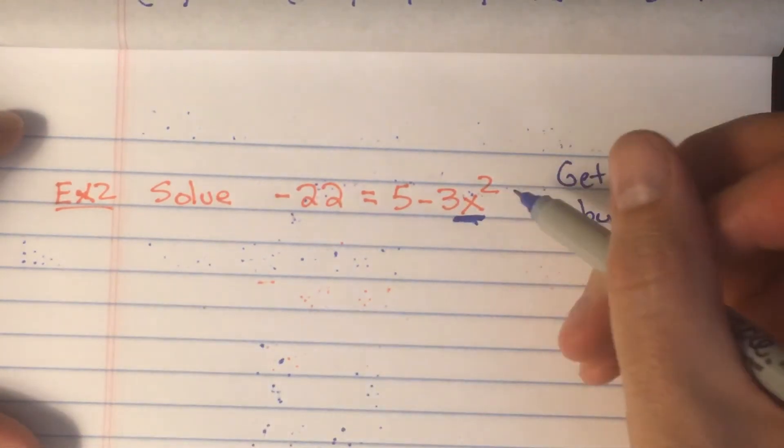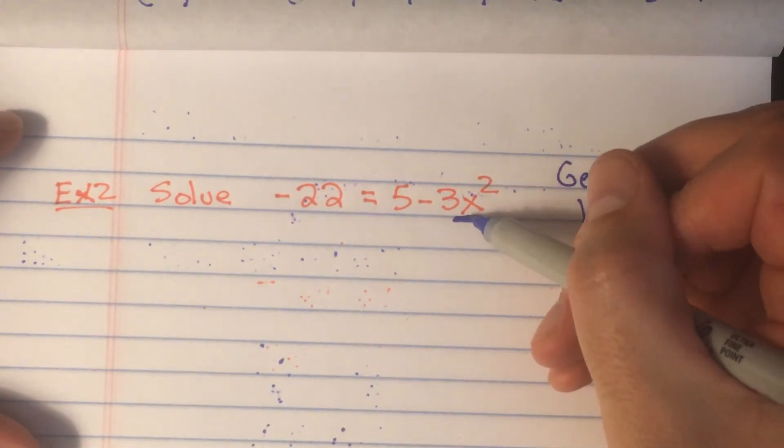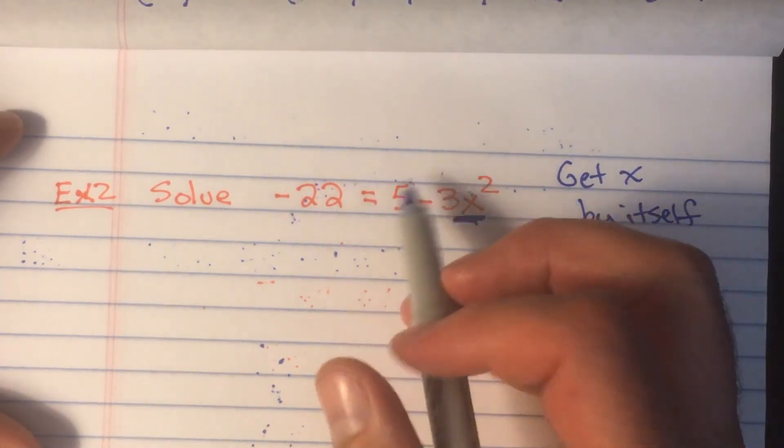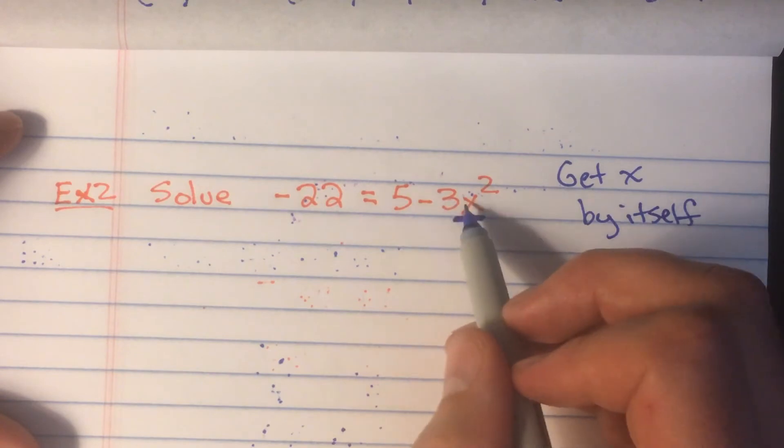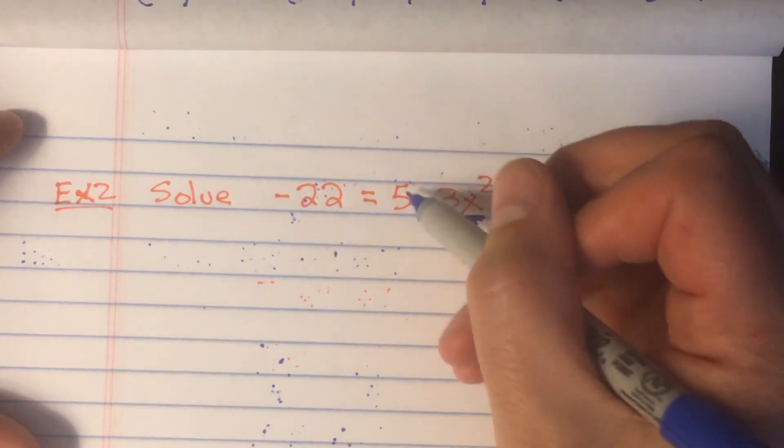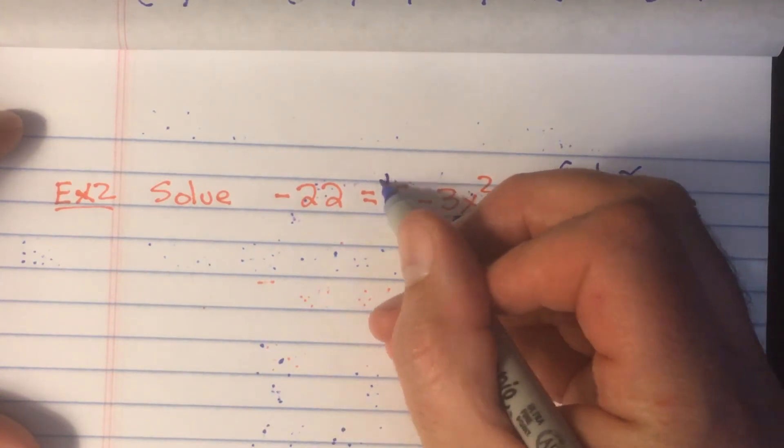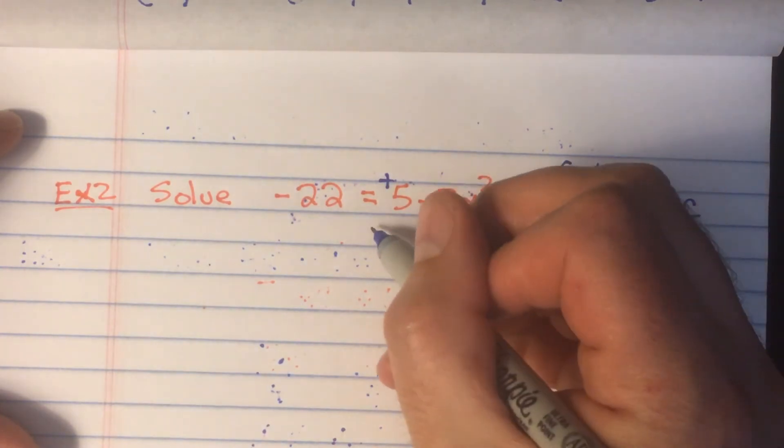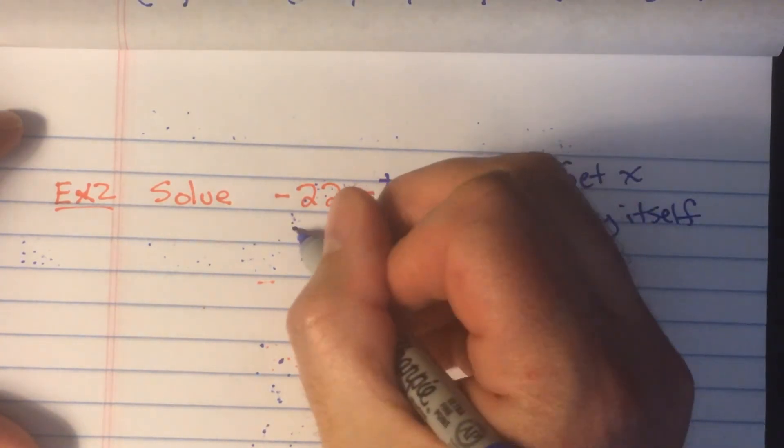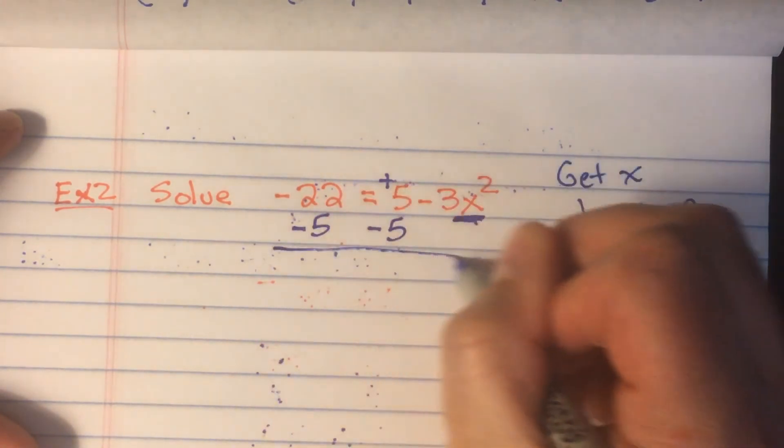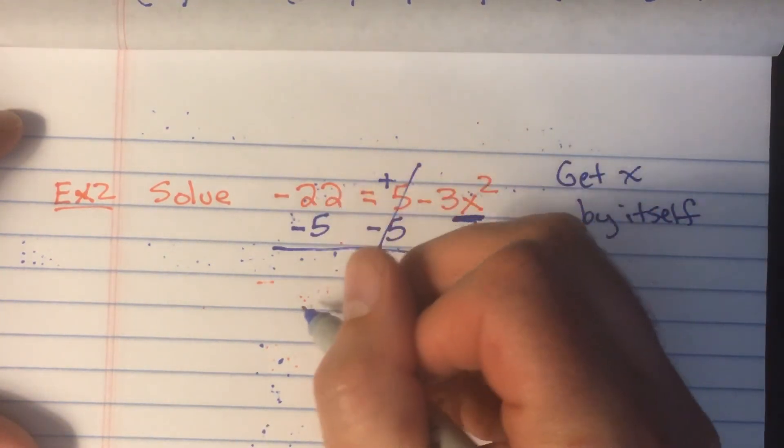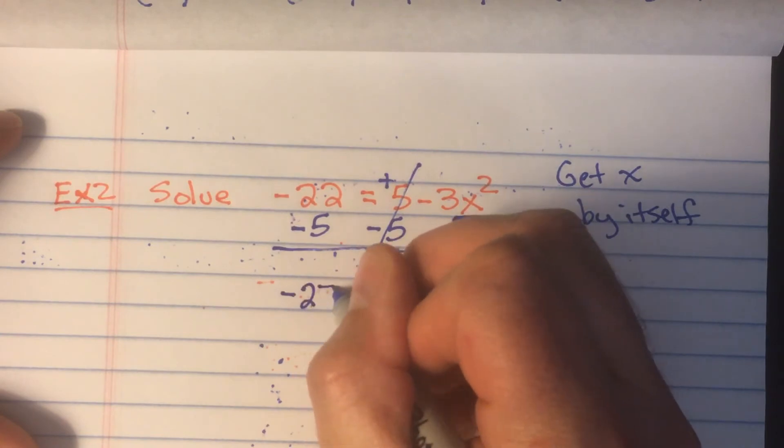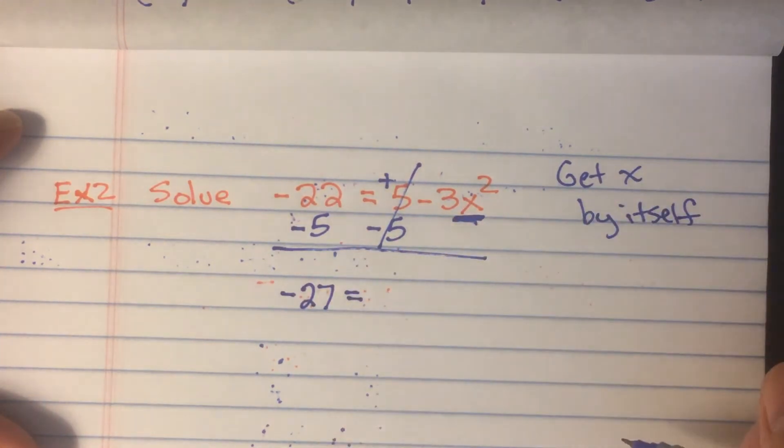So in this one, we're going to start farthest away from the x. We have three things bothering it. We have this positive 5 out front. Because remember, this minus sign belongs to the 3, or negative 3 times x squared, and we have this squared. So farthest away is the 5. How do we get rid of a positive 5? We just undo it by subtracting 5. So we're going to subtract 5 from both sides. That's going to cancel out or give me zero. Negative 22 minus 5, you can use a calculator for these, is negative 27.